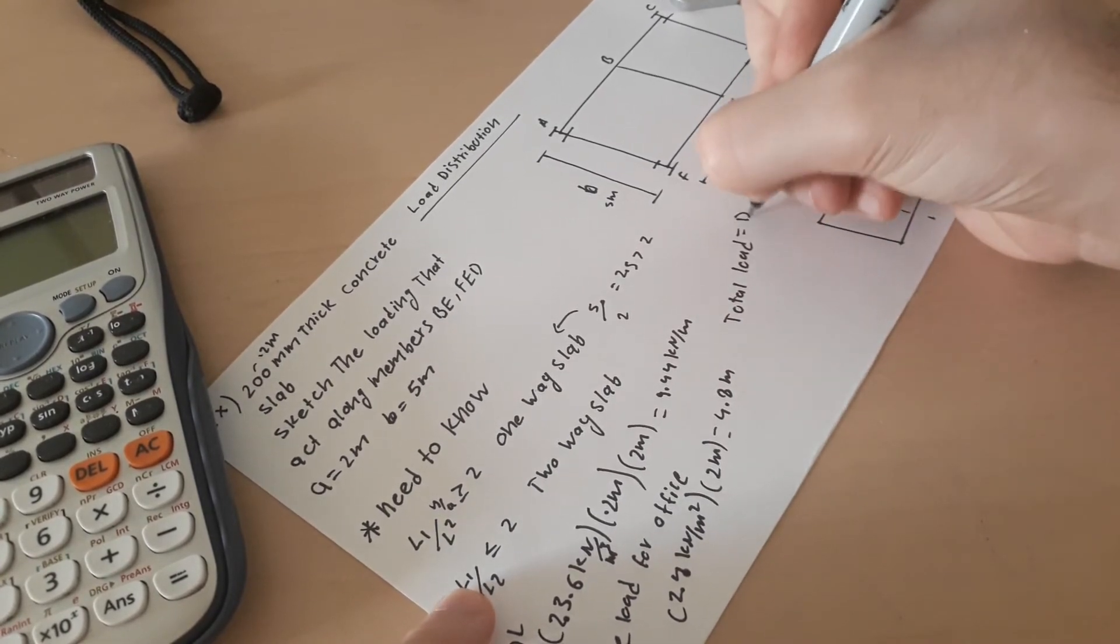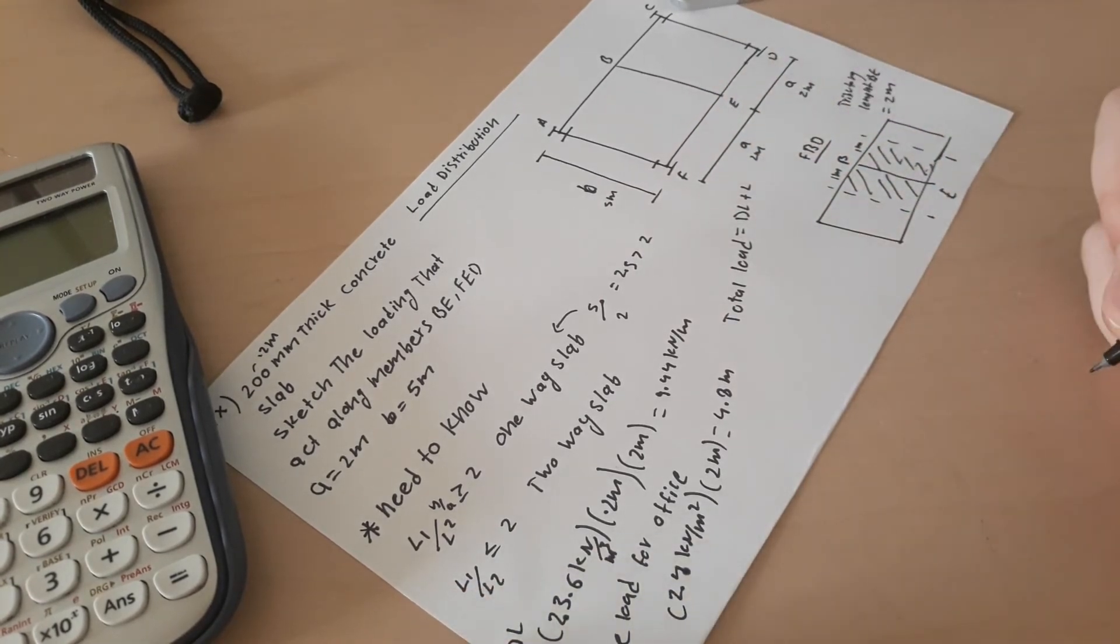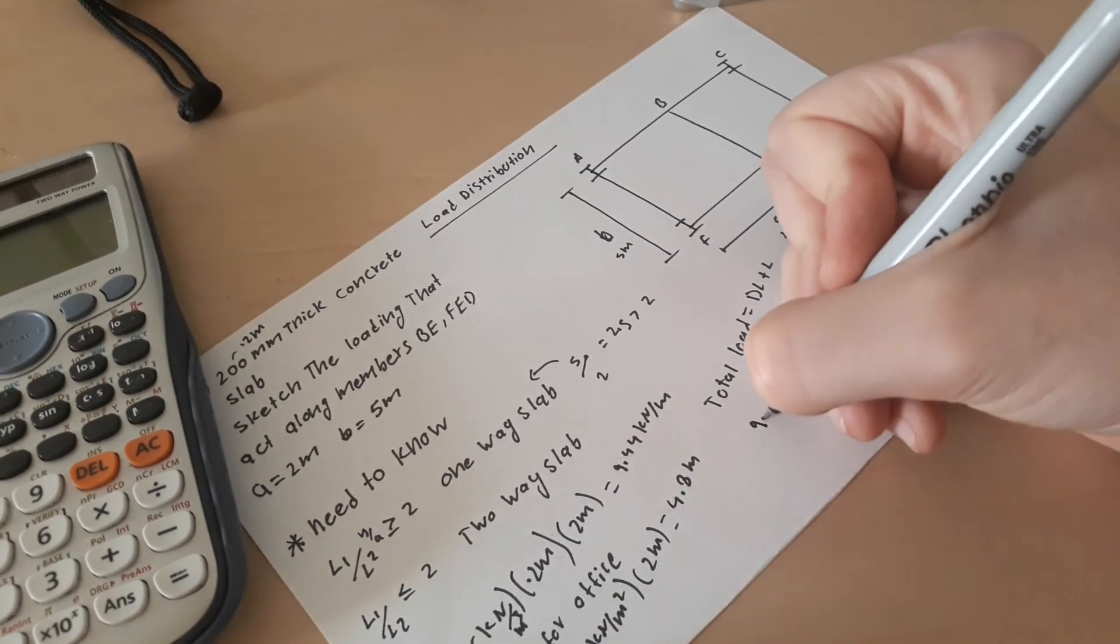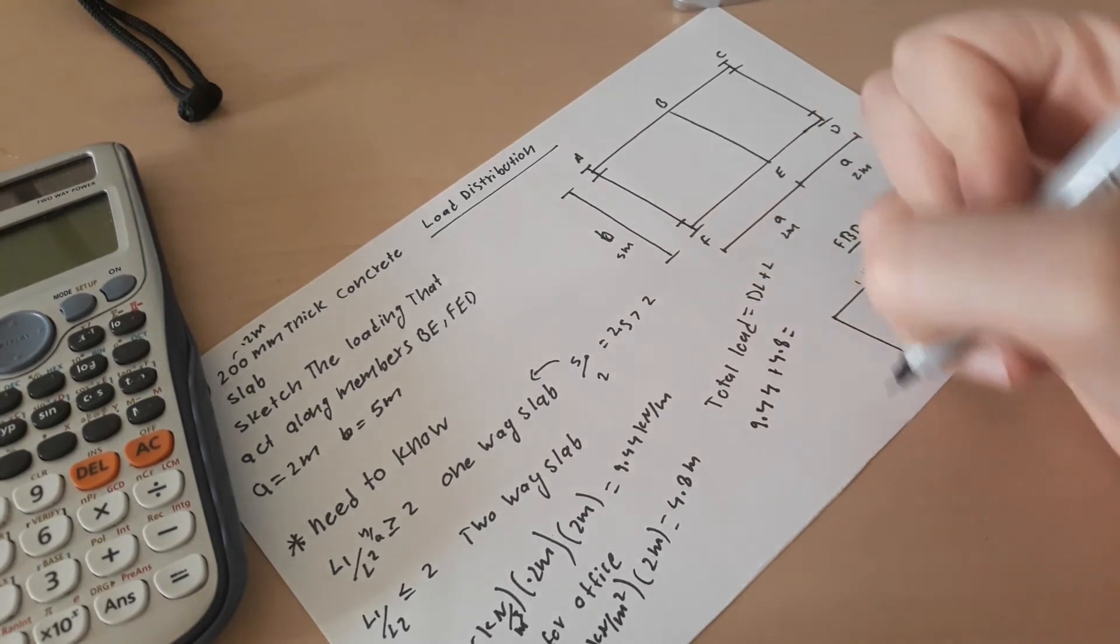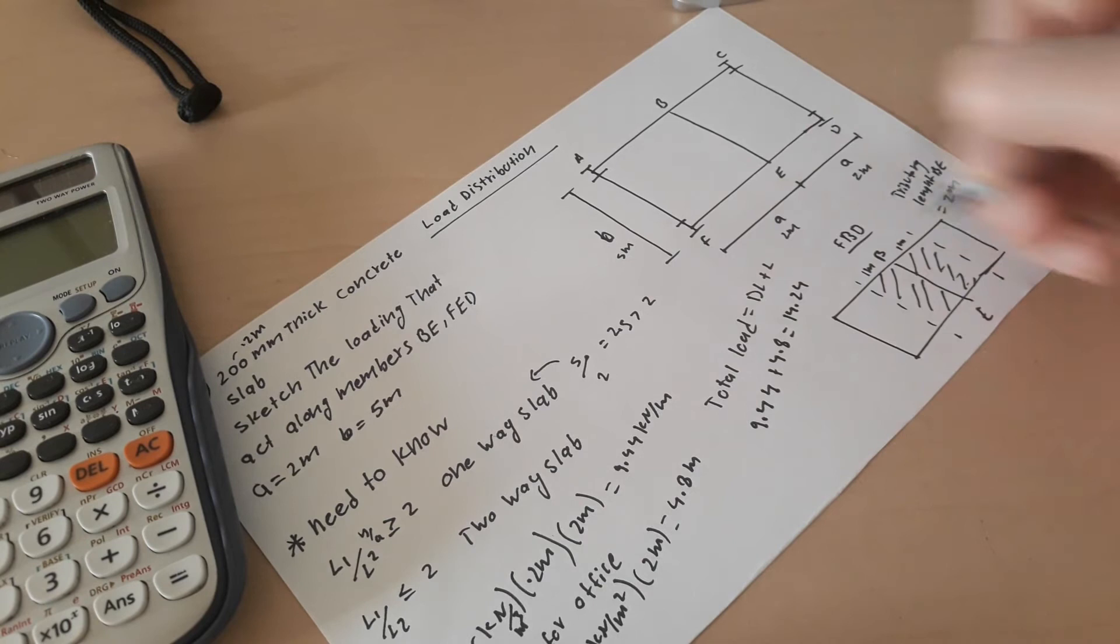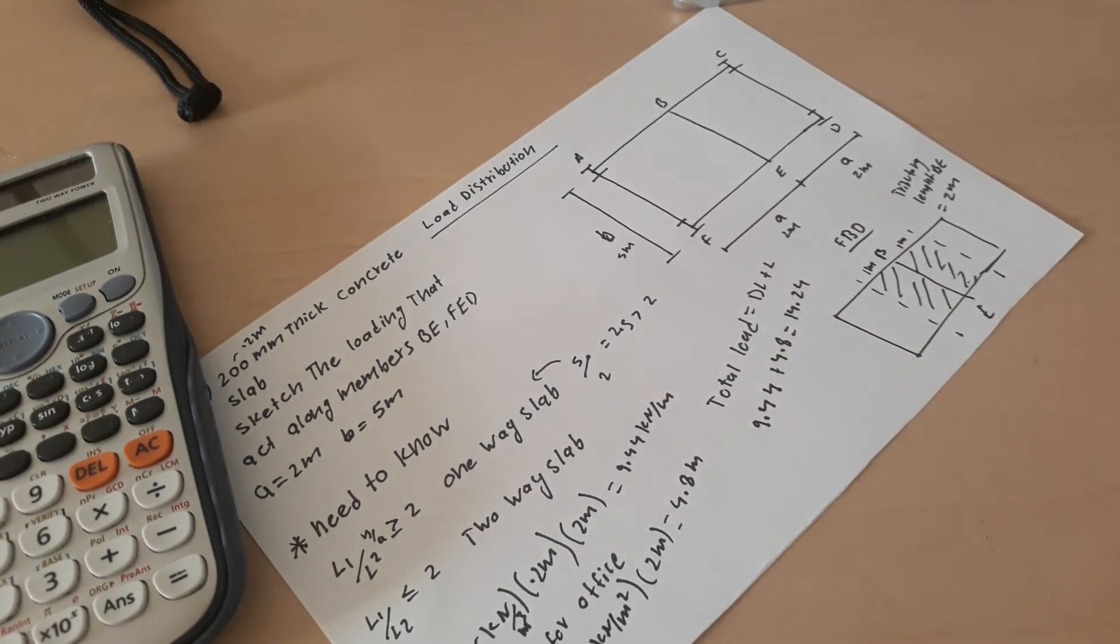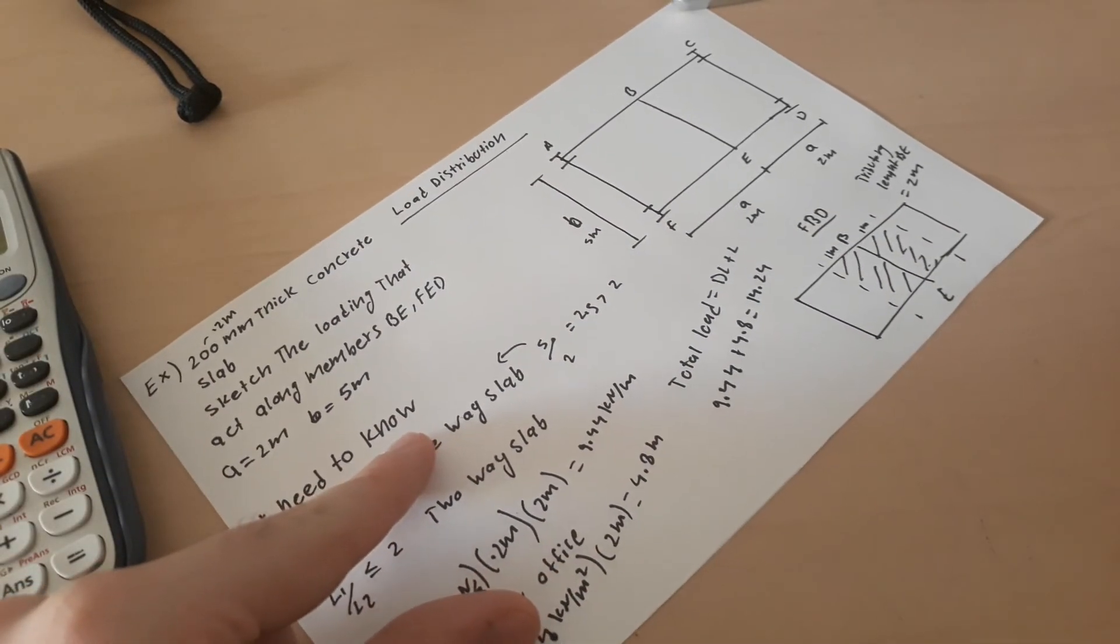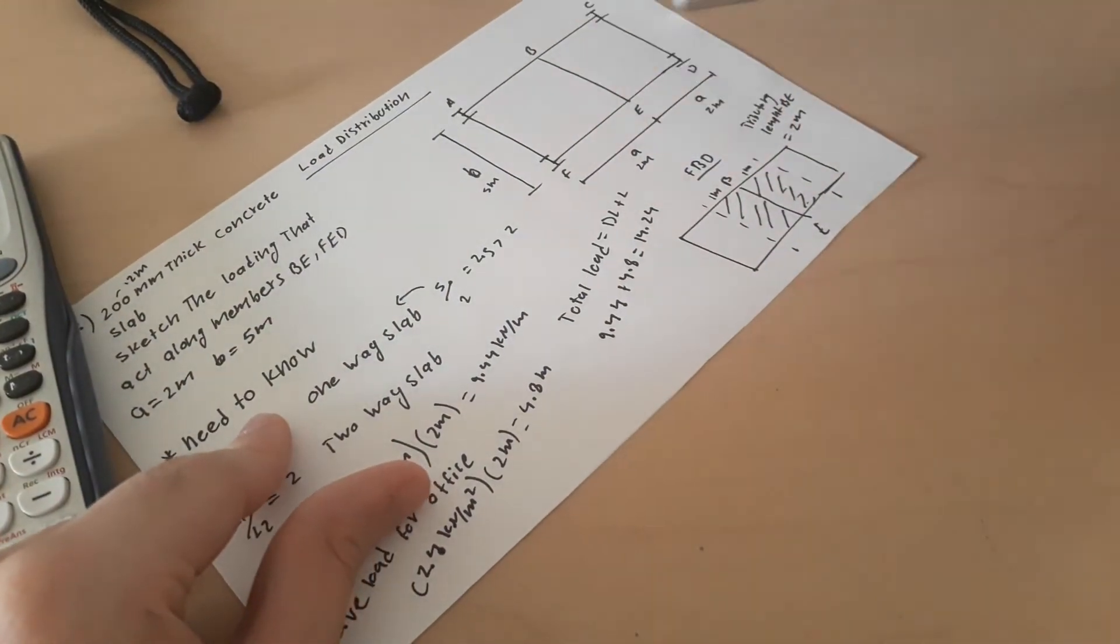So we need to add them: 9.44 plus 4.8, and this equals to 14.24 kilonewton per meter. Now what they asked us, they said sketch the loading act along members BE and FED.